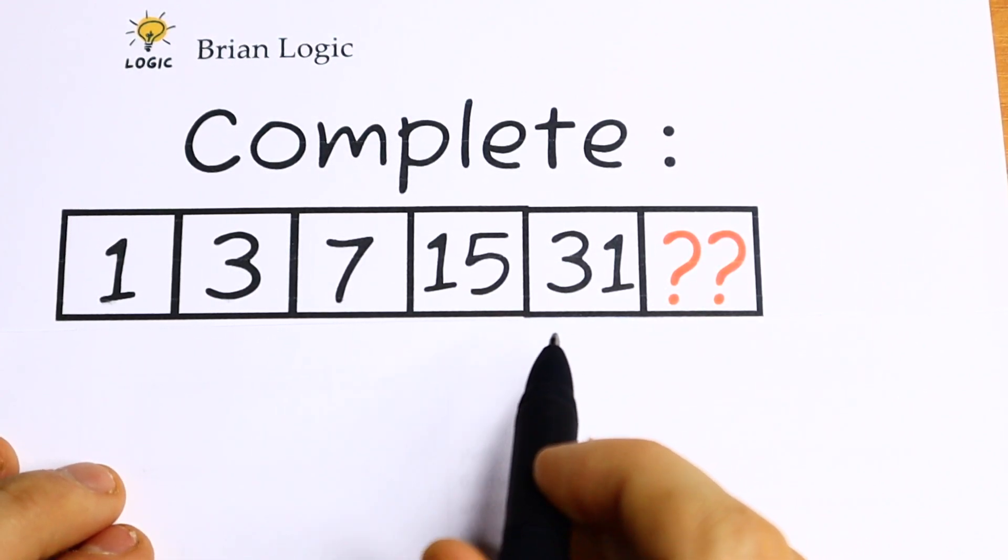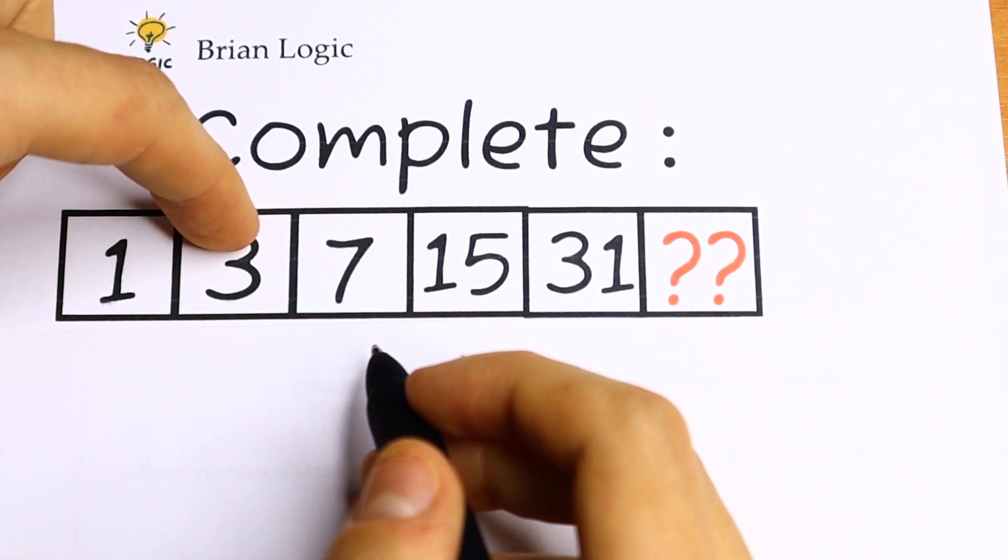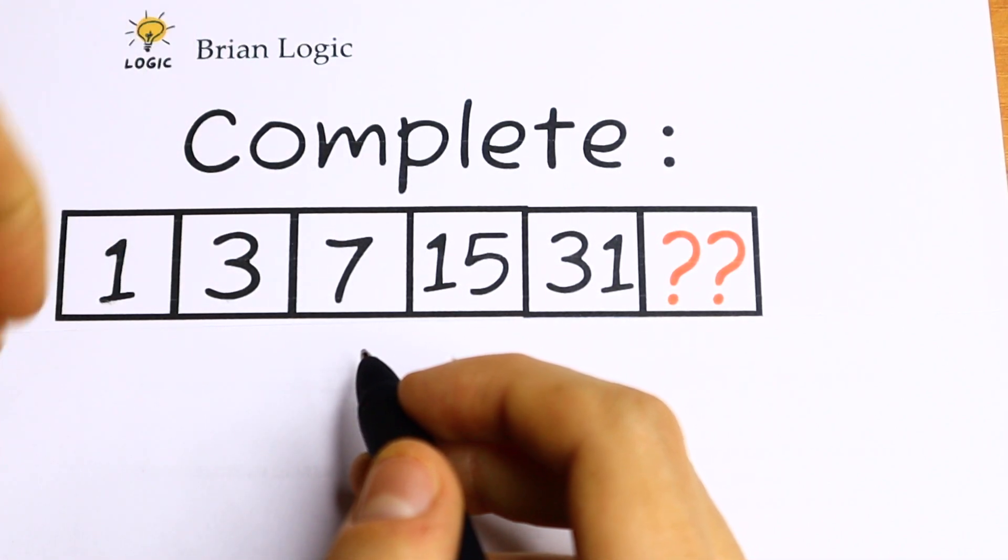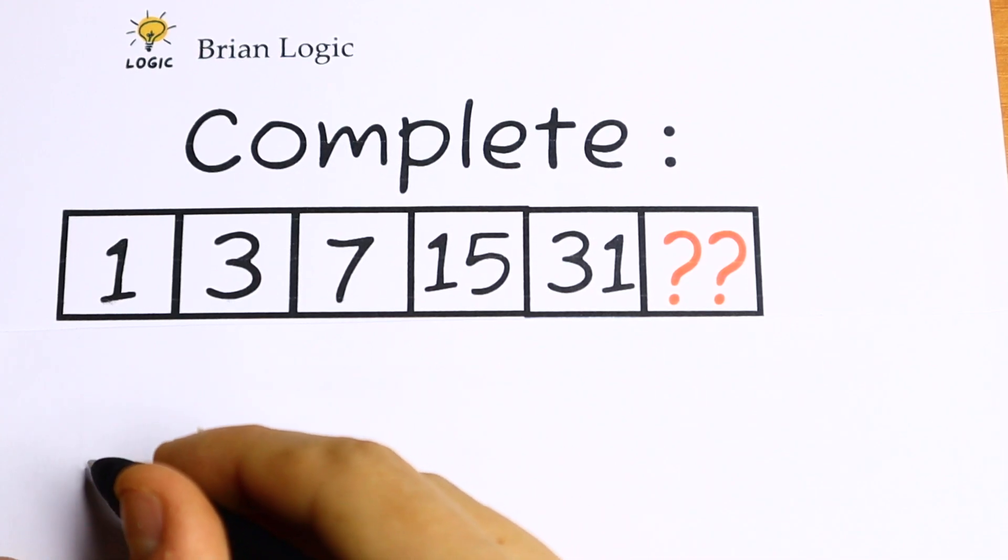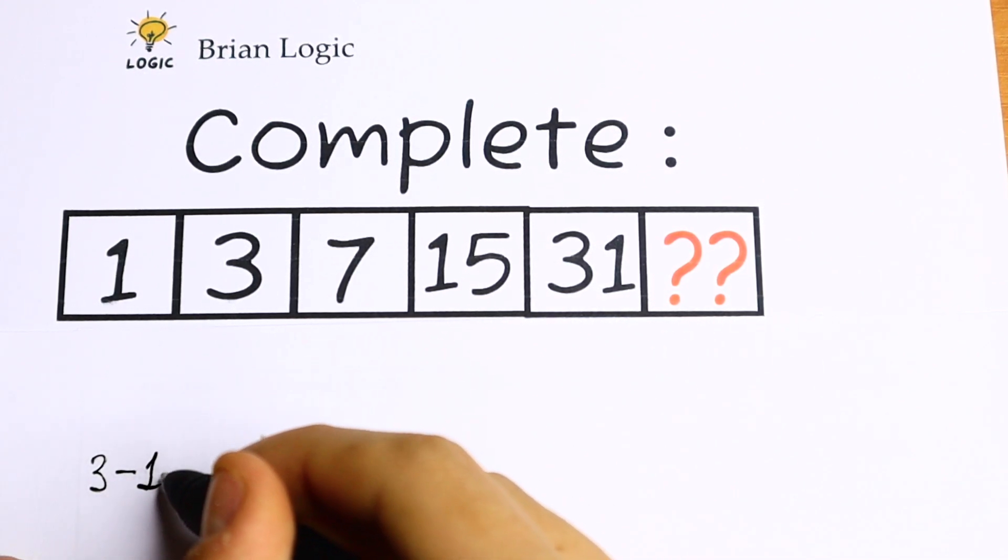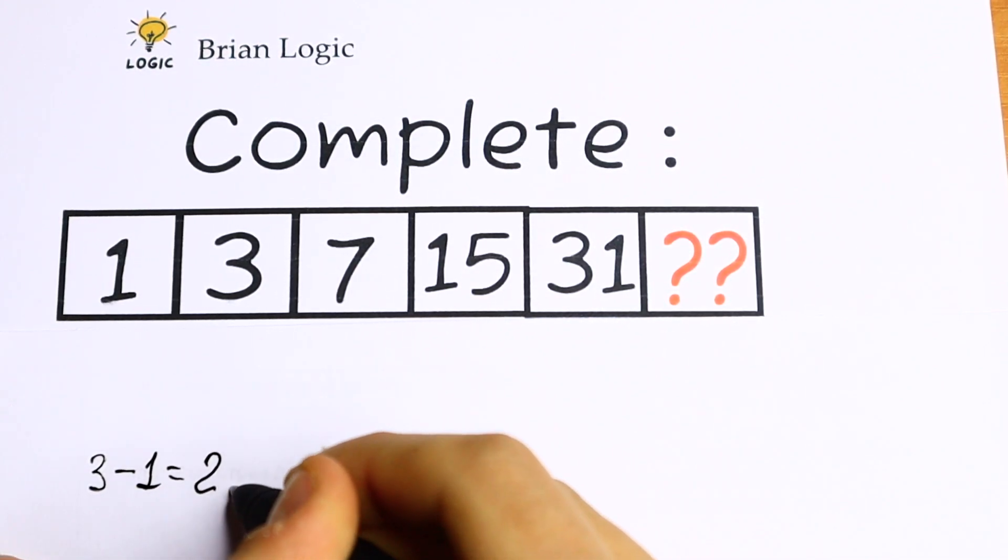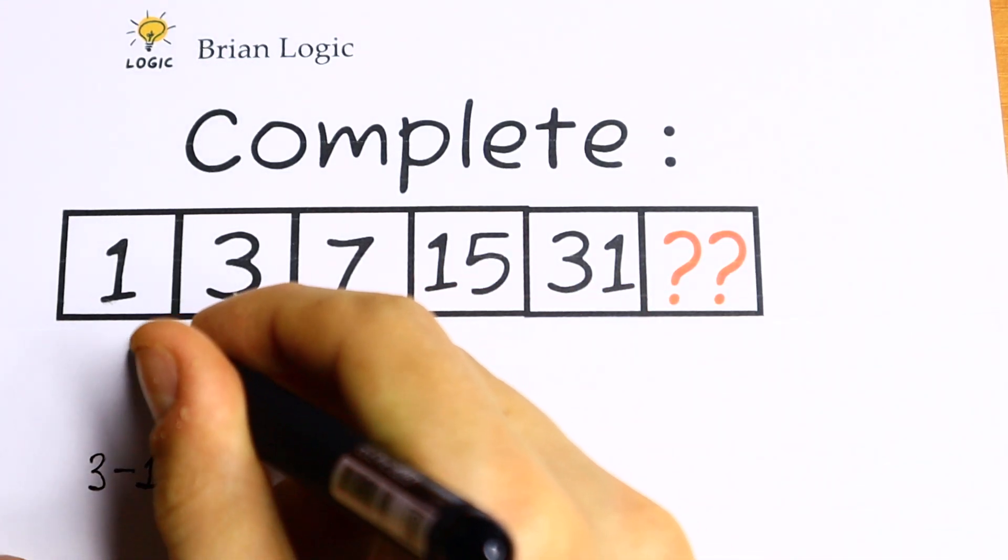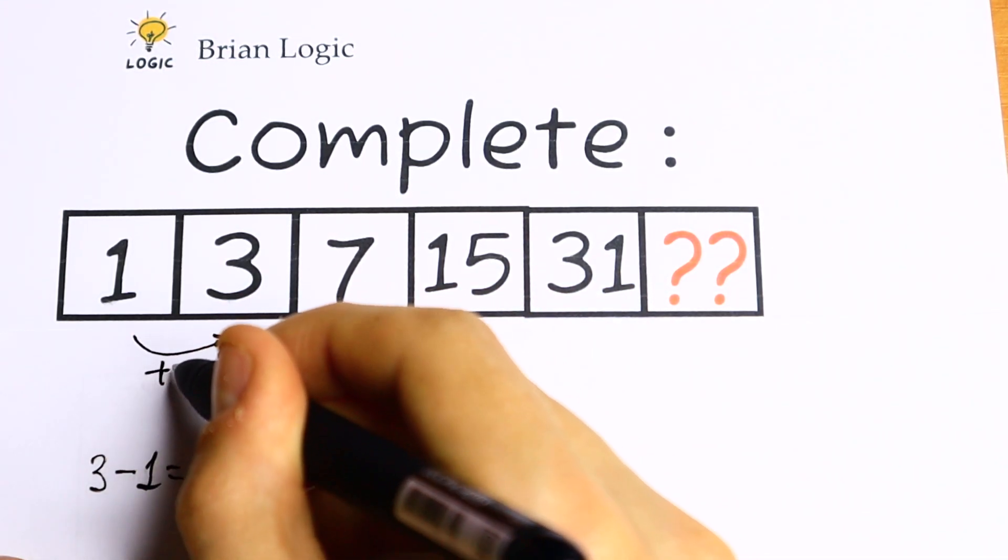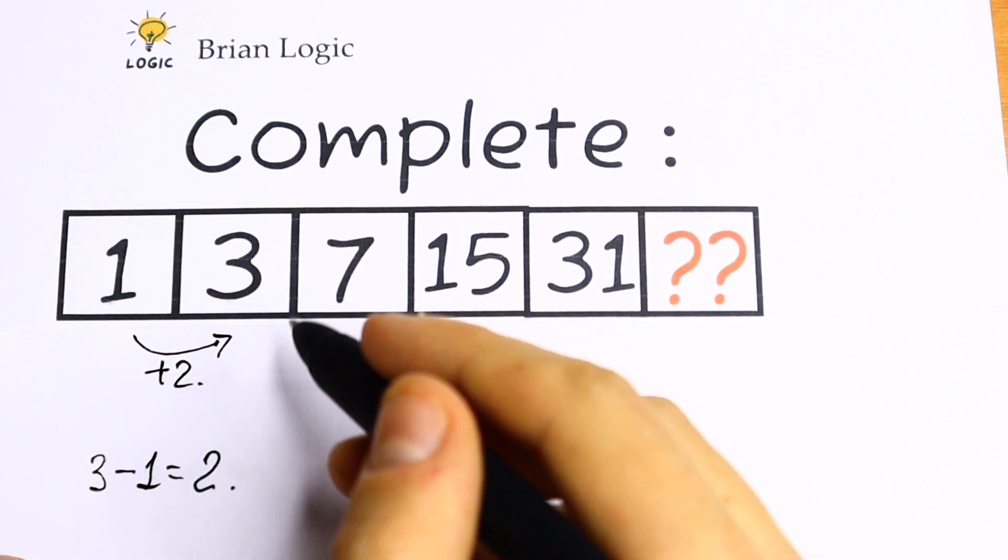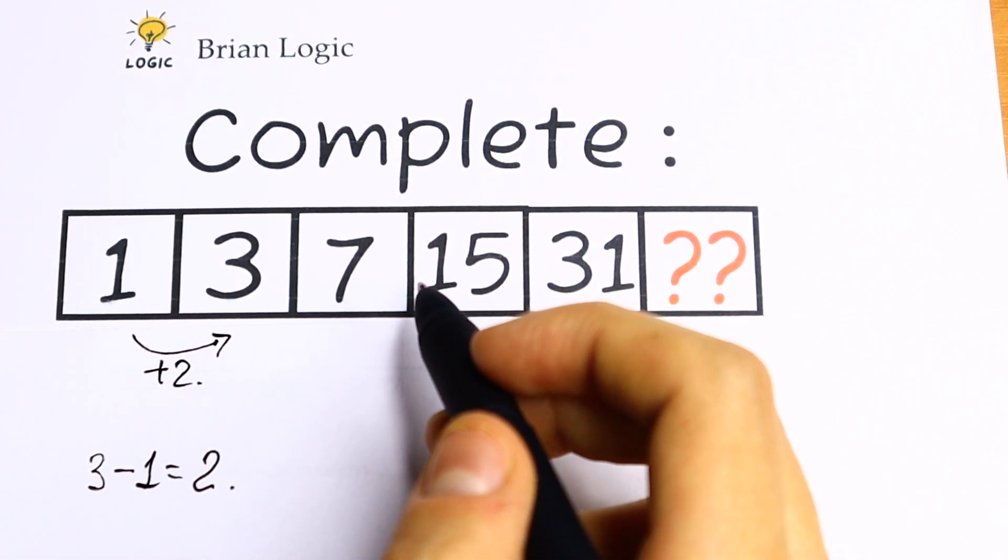But let's try subtraction. Let's subtract the next number from the previous one. What do we get? 3 minus 1 equals 2. So we need to add 2 to the first number to get 3. Let's use the same logic.